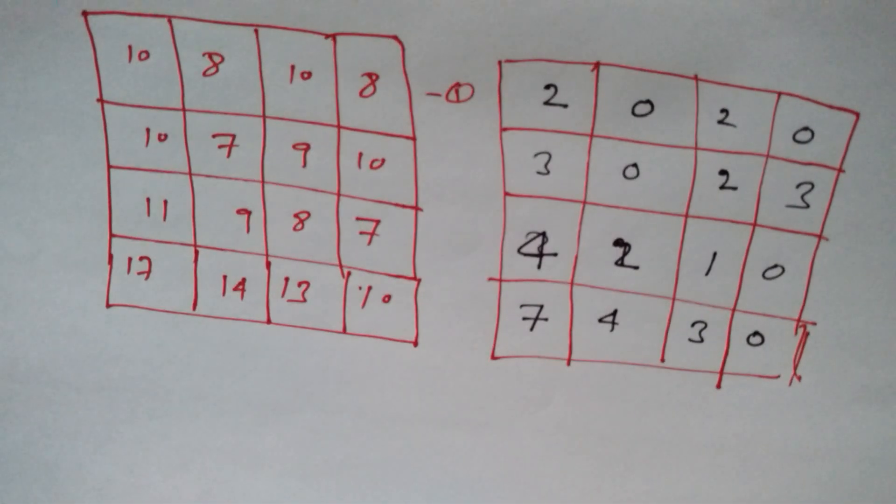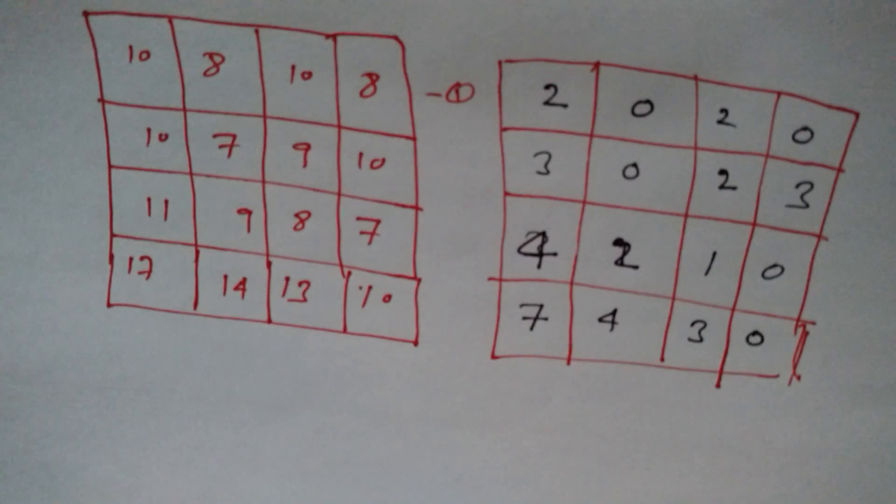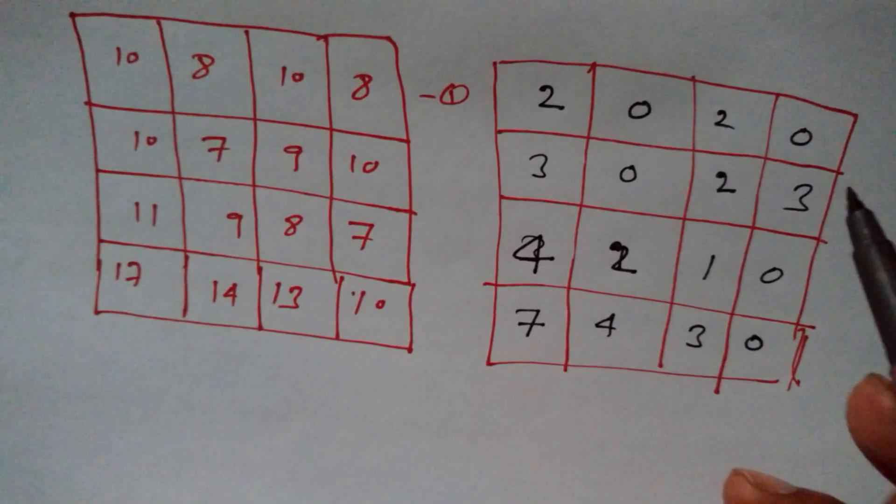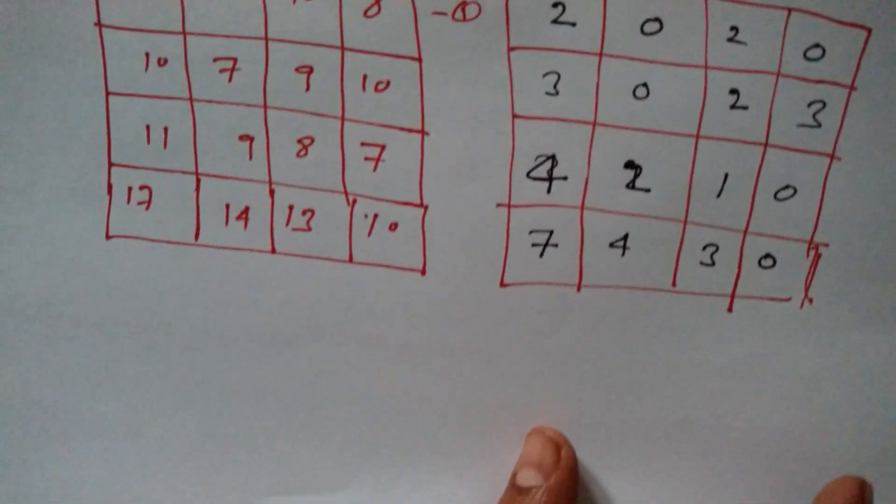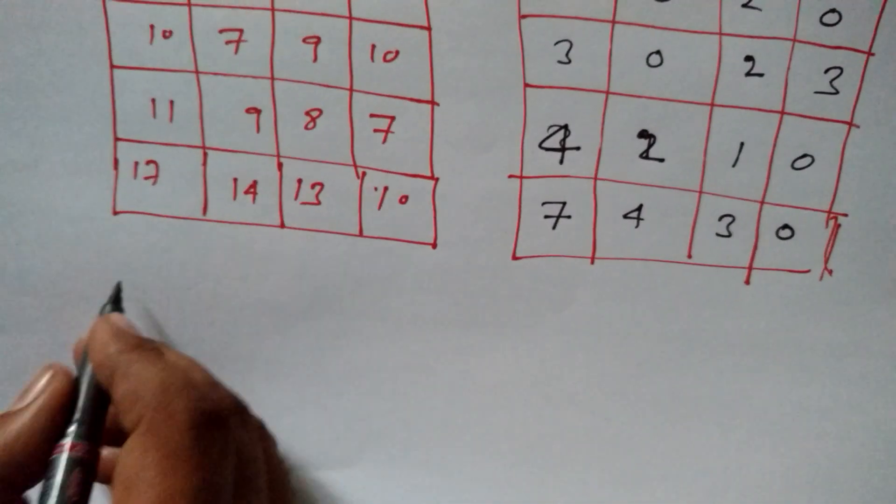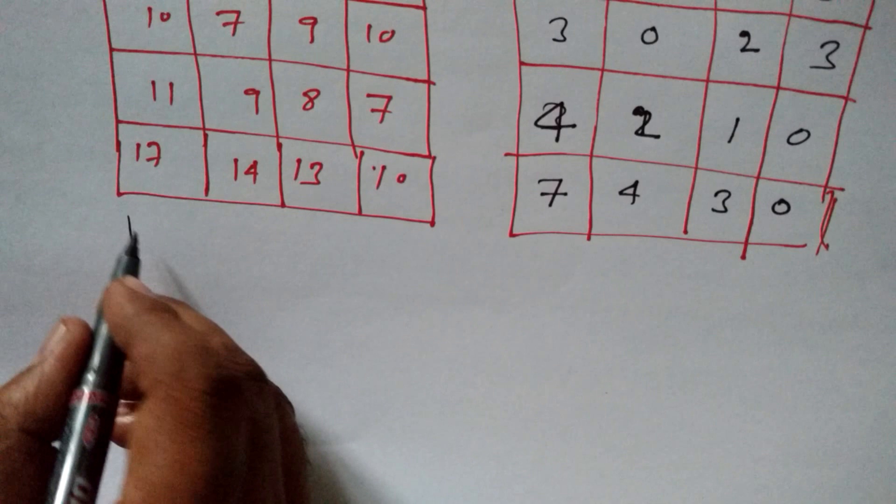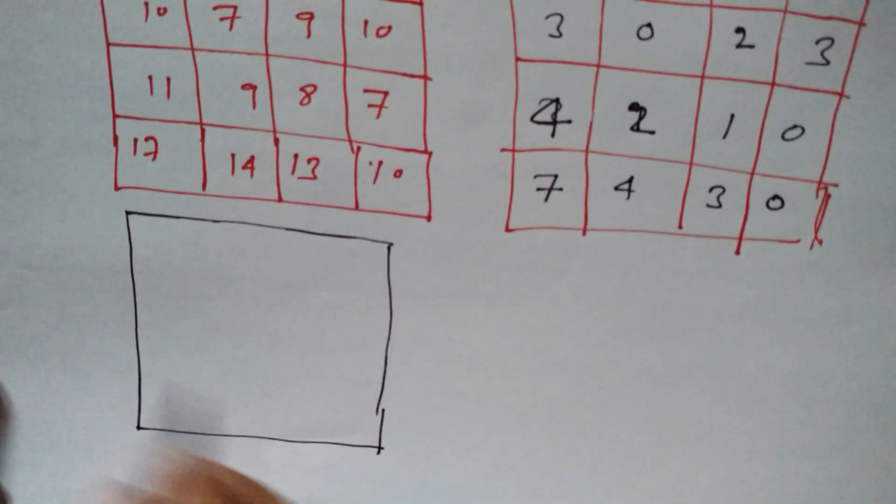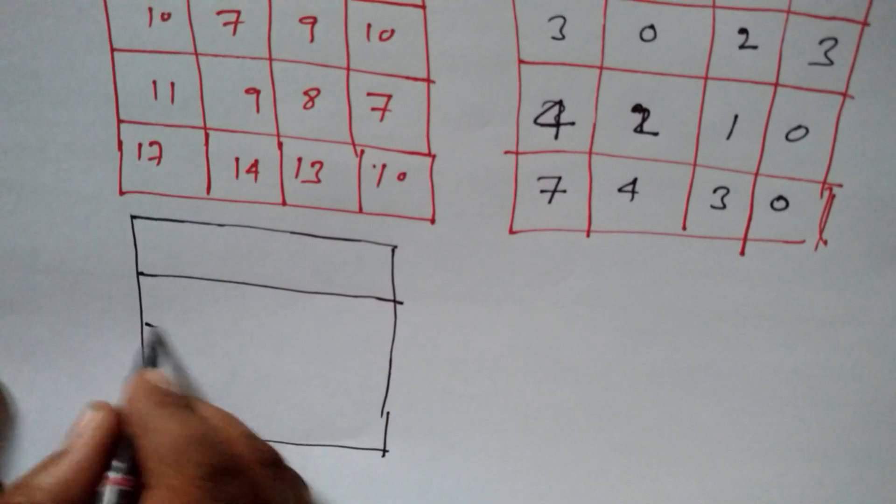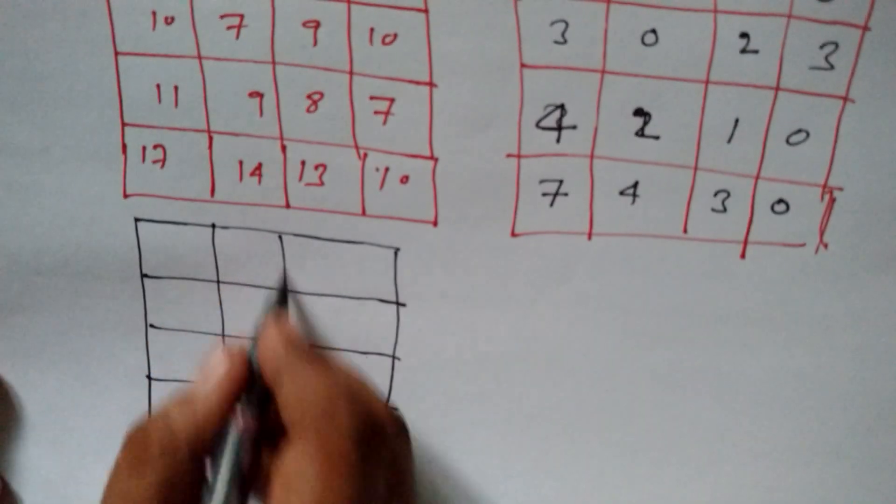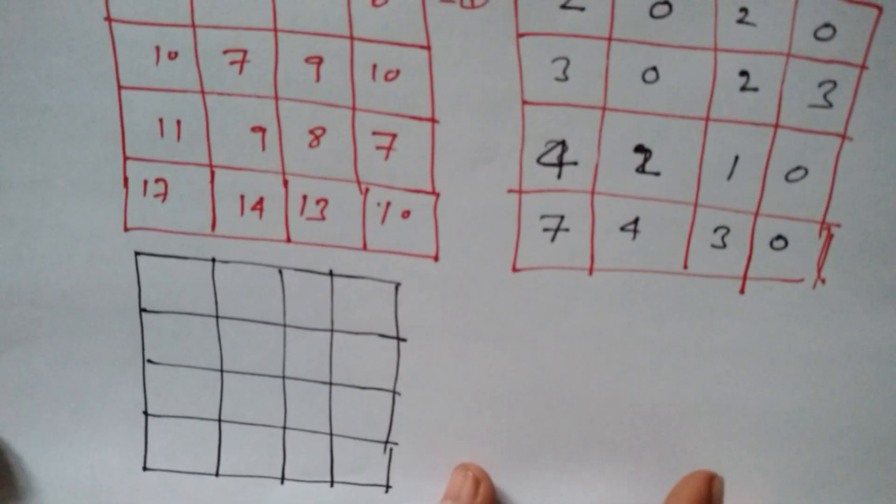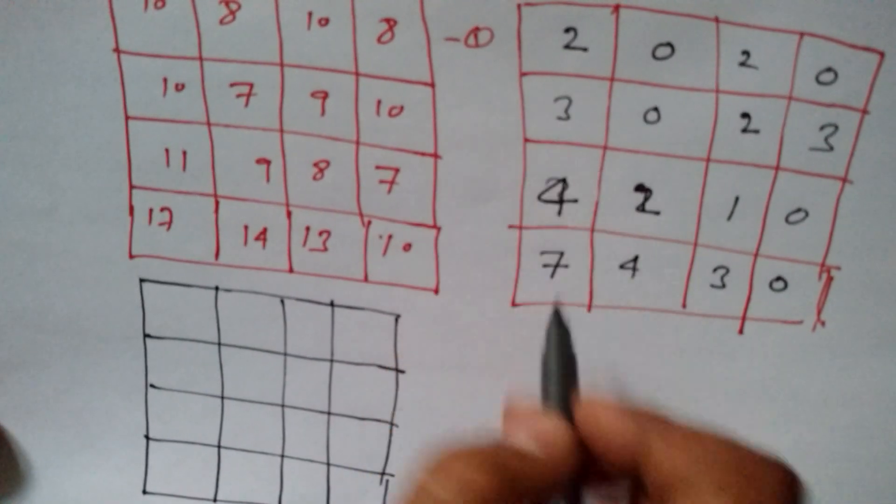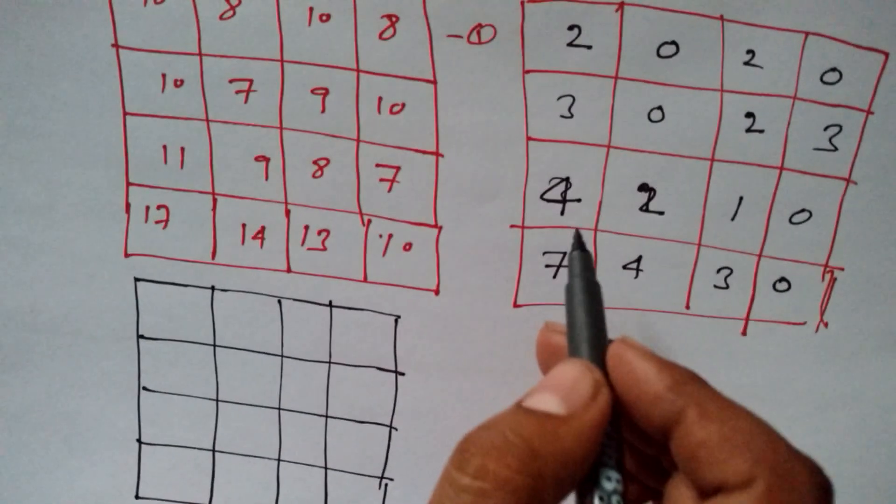So, what we have to do, we have to do the same operation what I did with row operation. We have to do column operation with this column, right. So, first of all, let me create a table so it will be easier for you to understand as well for me to make you understand about it. So, here what I am going to do, I am going to use the column operation.